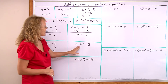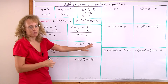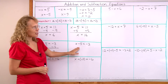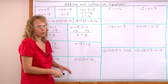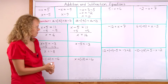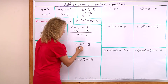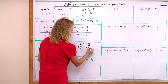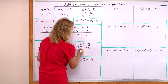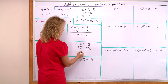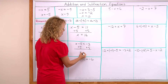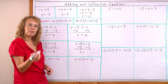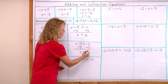Here, x minus 5 equals some number. To get rid of this minus 5, I add 5 to both sides. On the left side, we have x alone now, and then negative 3 plus 5 equals 2.